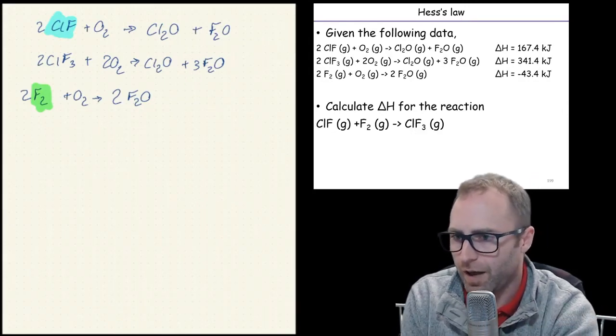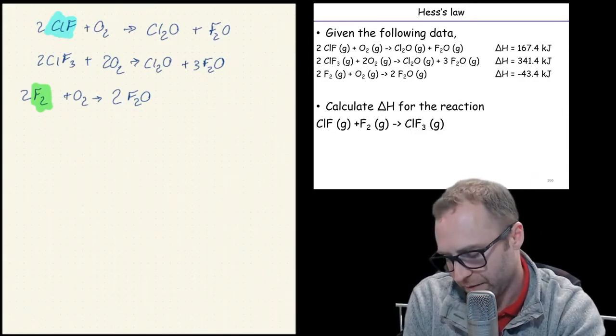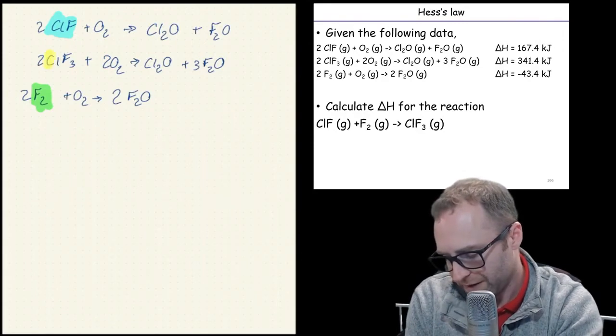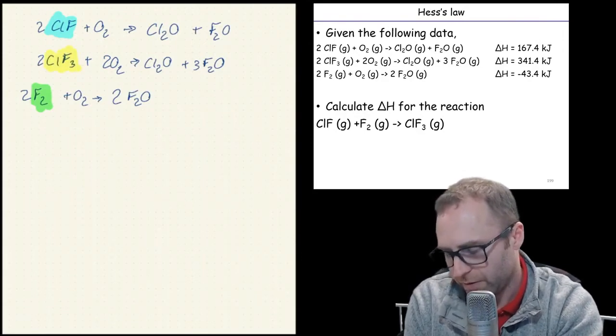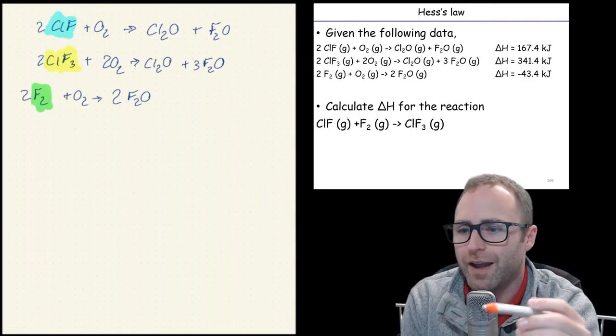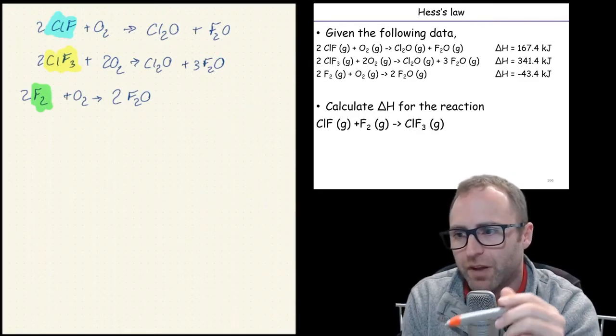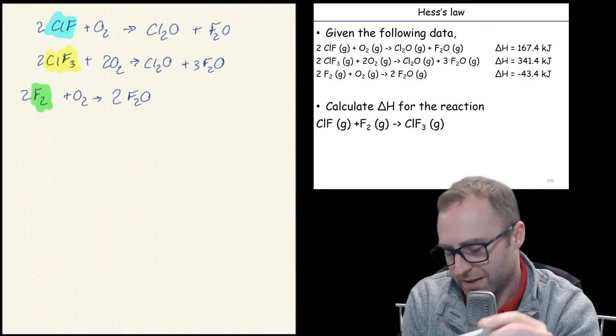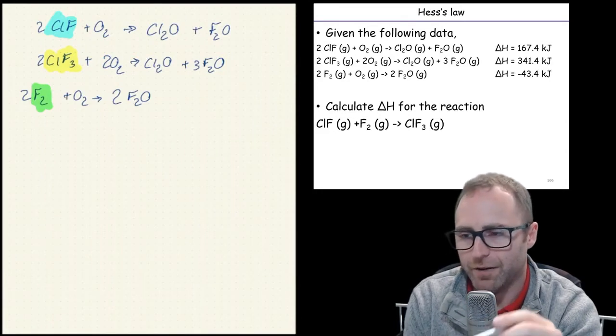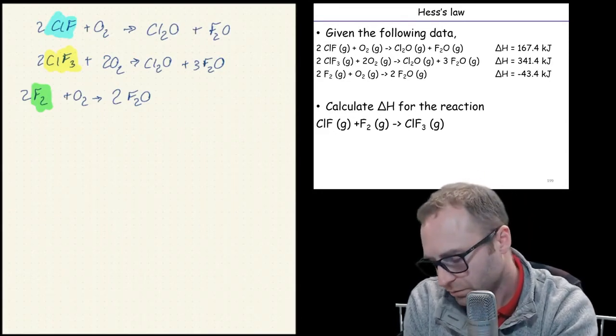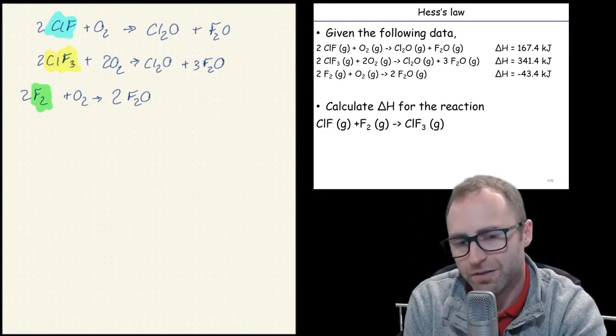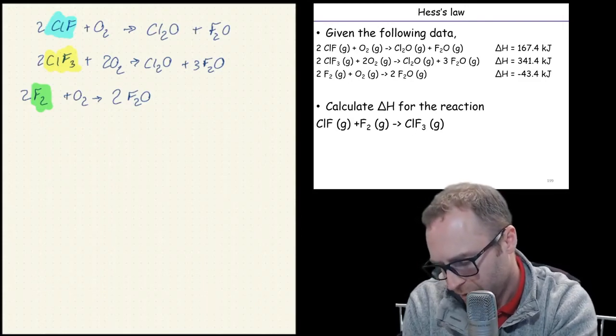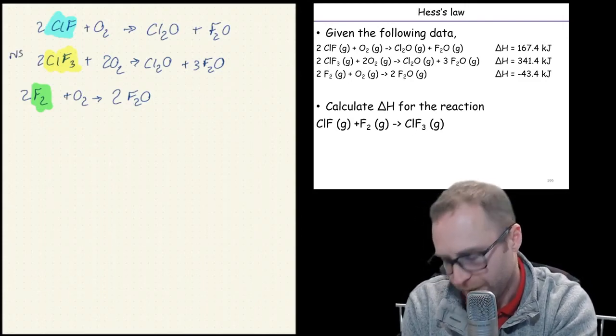Now my product for my final equation needs to be the monochlorine trifluoride. And if I look up in the three equations I've written out, there's only one place I see the chlorine trifluoride or the monochlorine trifluoride. And that's the second equation. The bummer here is that the second equation has it written out as a reactant. No big deal for us. Because what we can do is we can say we need to reverse that one.